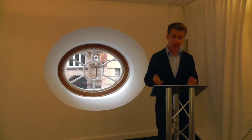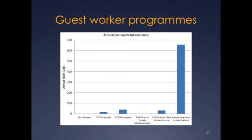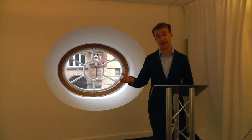Guest worker programmes, when done in randomised controlled trials compared with things like microcredit — very small loans to small businesses — or conditional cash transfers where we give people money on condition that they invest it in improving their business, the benefits are enormous. We're talking about differences of more than ten times in the income gain to families involved in guest worker programmes — in this case fruit picking in New Zealand — compared to getting these loans or this money. Migration might actually be a very, very good anti-poverty tool even if it is just guest worker programmes.